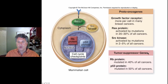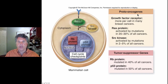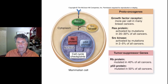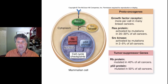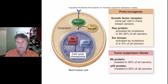Tumor suppressor genes when mutated are recessive to their normal genes, whereas proto-oncogenes when mutated to oncogenes are dominant to the normal copy. Every cancer is in a way a unique disease — there are different kinds of mutations that can lead to cancer, and different cancers have different degrees of malignancy. Some tumors are benign with over-proliferation of cells but are not aggressive, can be removed easily, and will not have metastasized to other organs.